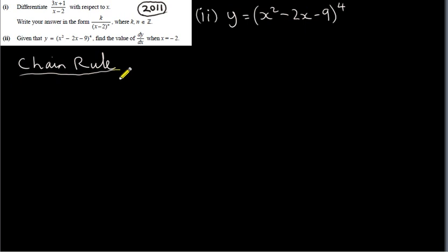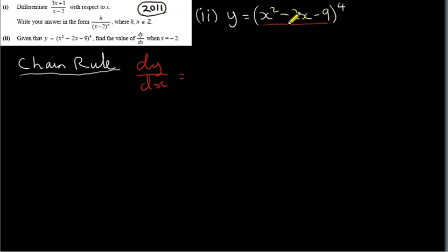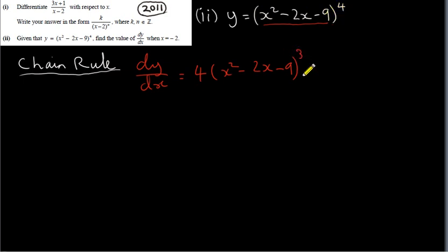What do we do? We pretend what's inside the brackets is a single term and differentiate around the brackets. We treat it like x — just as x to the power of 4 would become 4x cubed. So we bring the 4 down in front of the brackets and reduce the power by 1 to get 3: giving x squared minus 2x minus 9 to the power of 3. But then we must differentiate what's inside the bracket. Differentiating x squared gives 2x.